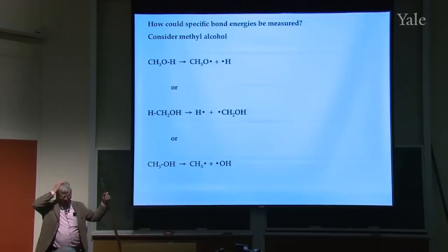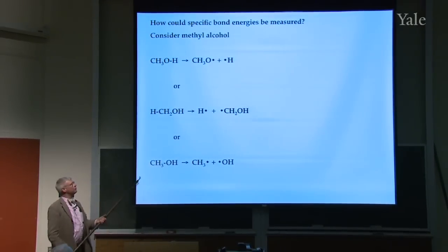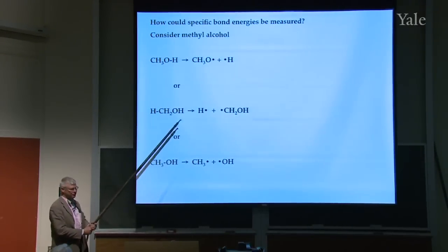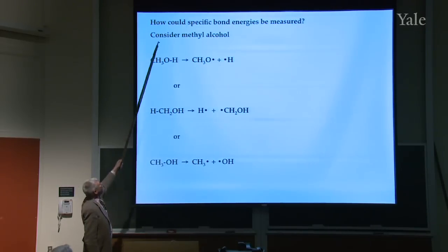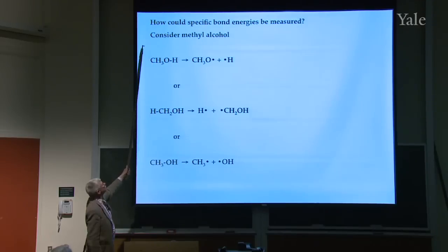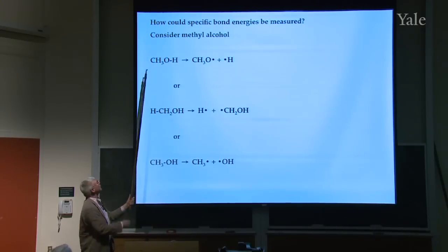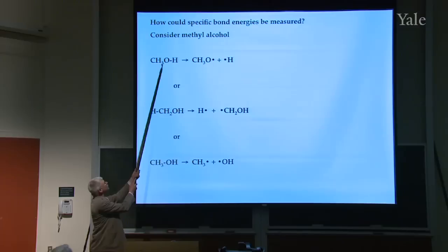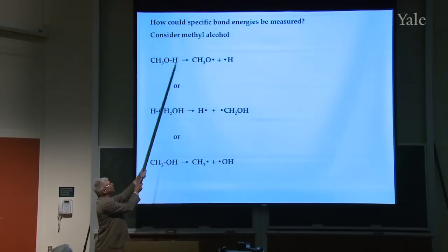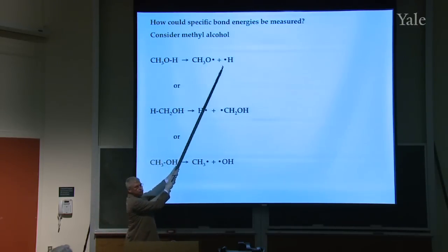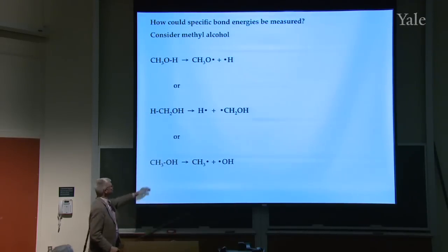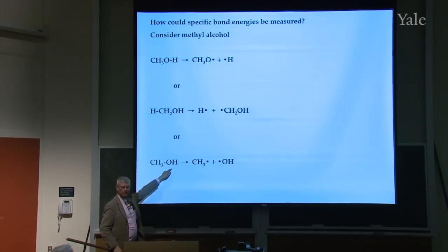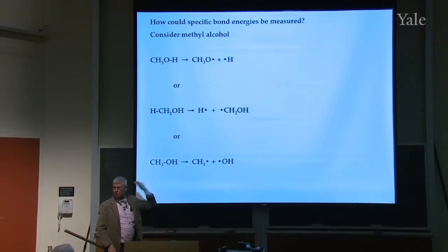You're going to have to measure the energy to go from the ground state up to the dissociation limit. If you took a molecule and you'd like to see if you could measure the different bonds in it, how could the specific bond energies be measured? I'd like to consider something like methanol — how you measure the bond energy to break the OH bond, then the CH bond, or the CO bond. I actually want to measure it, not calculate it.